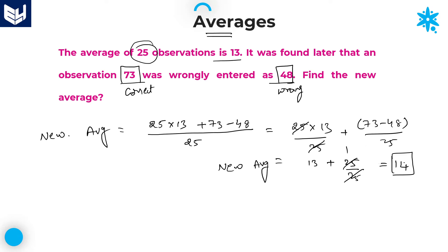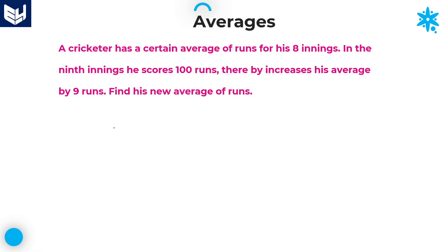That is the required answer for this question. Let's move on to the next question. A cricketer has a certain average of runs for his 8 innings. We don't know what the average is up to 8 innings, so let us consider that up to 8 innings the average is x runs.